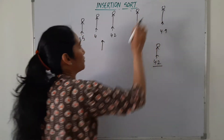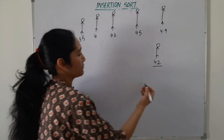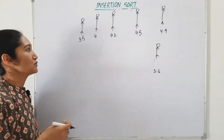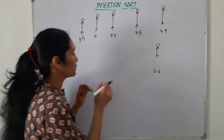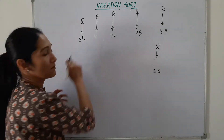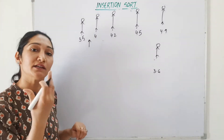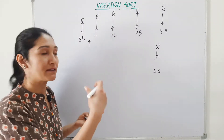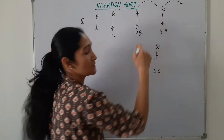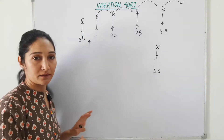Now suppose the next student coming has a height of 3.6 feet. If we look at the line, this student needs to be perfectly fit height-wise, so he should come between the first two students. To accommodate him there, we again need to shift students one place backward. We tell them to move one place forward — meaning go to the back side. Then one more shifts back, another shifts back, and another has to shift back, and then the new student comes to that position.